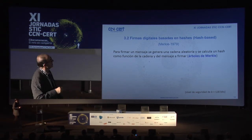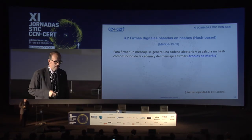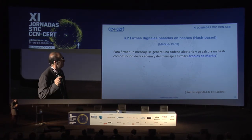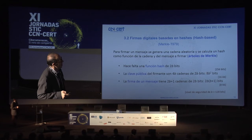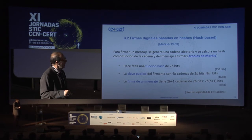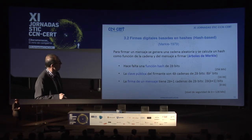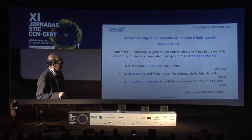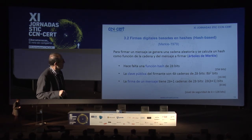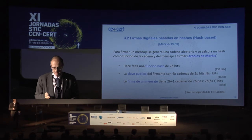Las firmas digitales basadas en hashes se propusieron por Merkle en 1979. Se trata de firmar un mensaje mediante una cadena aleatoria calculando un hash —los árboles de Merkle. Para 128 bits de seguridad hace falta una función hash de 2B bits, lo cual no es problema, pero la clave pública requeriría unas cadenas de bits de aproximadamente 16 K, mientras que la firma de un mensaje tendría unos 8 K. También trabajamos con tamaños un poco más grandes de lo habitual.